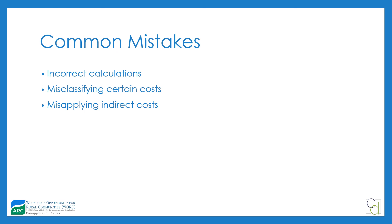A few common mistakes grantees make with budgeting: First, calculation errors. In the final scramble of grant writing, use a spreadsheet. Double and triple-check your calculations and verify that amounts are identical across every place they're discussed. Second, misclassifying costs or misapplying indirect costs — lean on your finance people and follow both the code and your internal policies. Grantee monitoring is largely based on your own internal controls. Don't guess; ask how similar things have been treated on past federal grants and continue doing that unless you have a clear justification for changing.